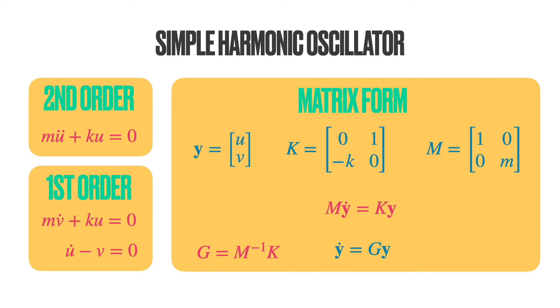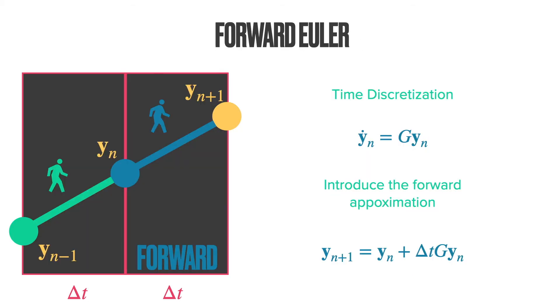We can solve this first-order differential equation using the forward Euler scheme. So first, let's do a time discretization. The first-order differential equation, the continuous form, y dot is equal to gy, has to be discretized. That is, it is written at n. So y dot n is equal to gyn.